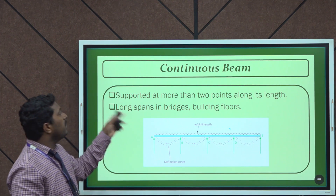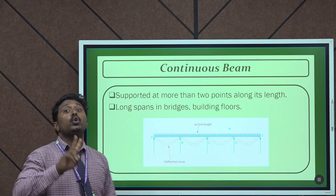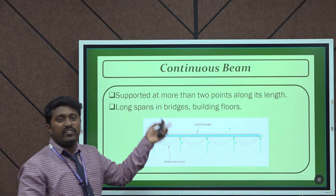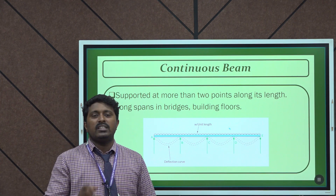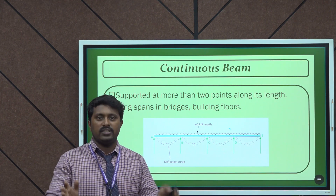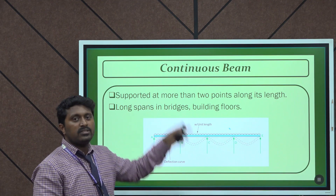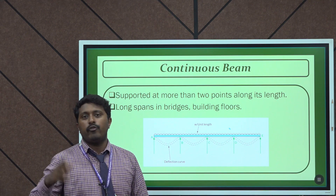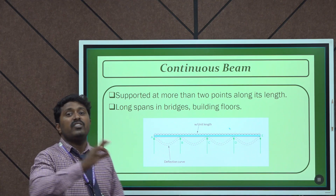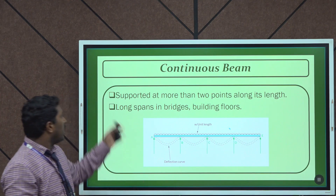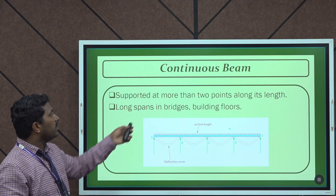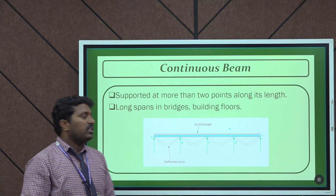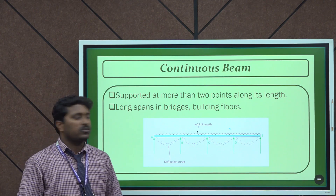The next type is the continuous beam, which has more than two supports. Compared to a simply supported beam that has only two supports at both ends, a continuous beam has three, four, or five supports. It is essentially an extended version of the simply supported beam. Applications of continuous beams include bridges and buildings. They are called continuous beams because they have more than two supports.